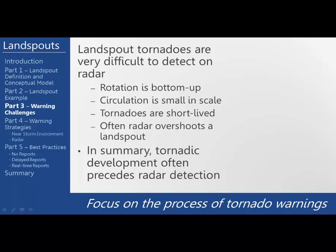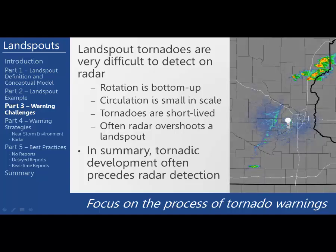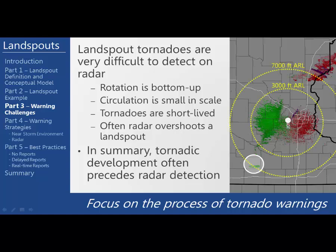In summary, tornadic development often precedes radar detection. Here's the base reflectivity and the corresponding base velocity from when the landspout tornado was occurring. The storm of interest is highlighted in the white circle. Range rings show the lowest radar elevation is over 7,000 feet above radar level in this area of the CWA, which reemphasizes the difficulty in detection with these tornadoes.